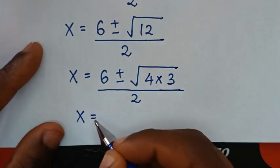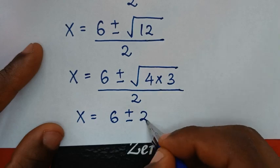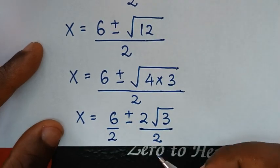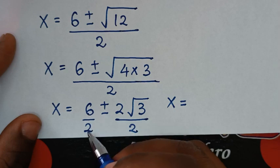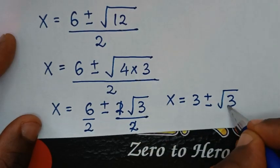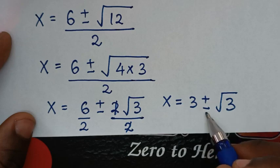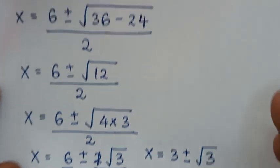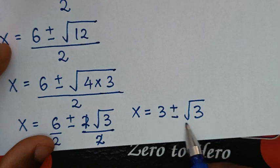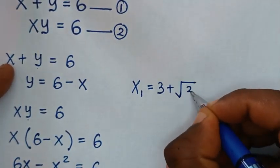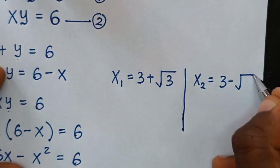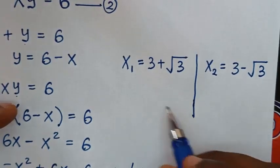Continuing: square root of 4 is 2, so we have 6 plus or minus 2 times square root of 3, all over 2. Dividing both terms by 2 gives x equals 3 plus or minus square root of 3. Because of the plus or minus, we have two solutions: x1 equals 3 plus square root of 3, and x2 equals 3 minus square root of 3.